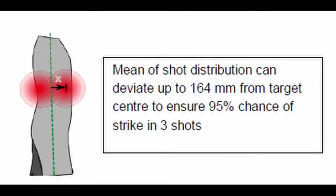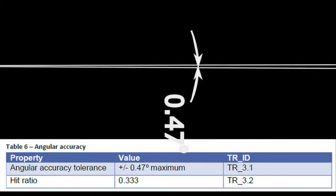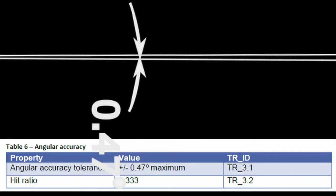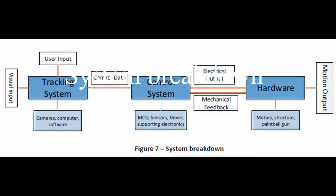This turned out to be about 164 millimeters from the target center. So with that 164 millimeters, at a 20 meter range you have to have an angular accuracy of about 0.47 degrees, and this will give you a hit-to-miss ratio of 1 in 2 to 1 in 3.